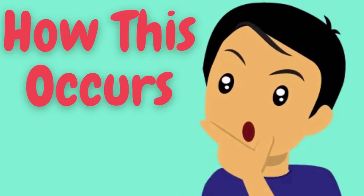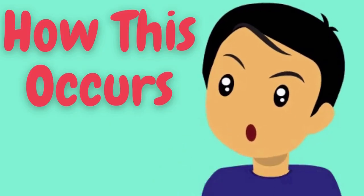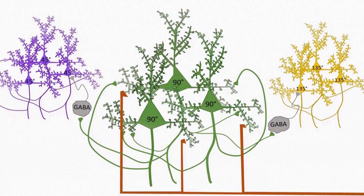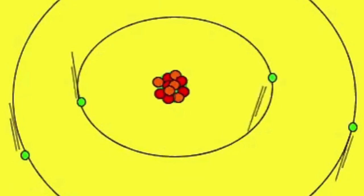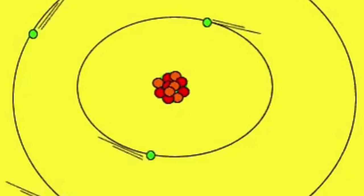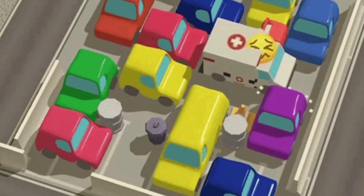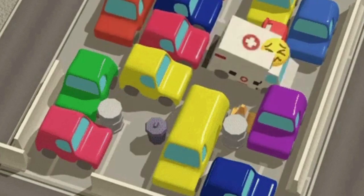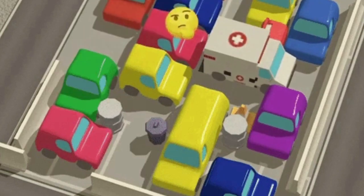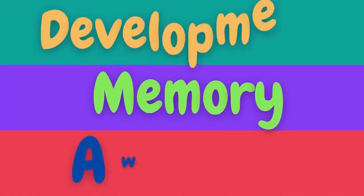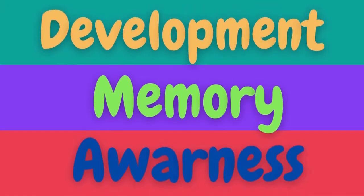There is a lot we still don't know about precisely how this occurs. Some common sedatives bind to the GABA receptor in the brain's neurons, holding the channel open and allowing negatively charged particles to stream into the cell. Negative charge builds and acts like a traffic jam, preventing the neuron from transmitting electrical signals. The nervous system has many of these gated channels controlling pathways for movement, memory, and awareness.